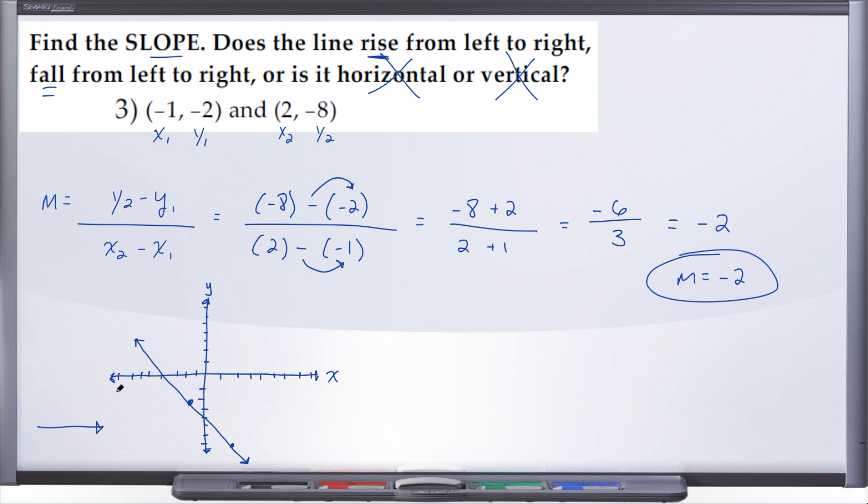But here we have, again, when we read the graph from left to right, we see that we start higher. As we work our way to the left, this line is getting lower and lower. And so we can see that it's falling.